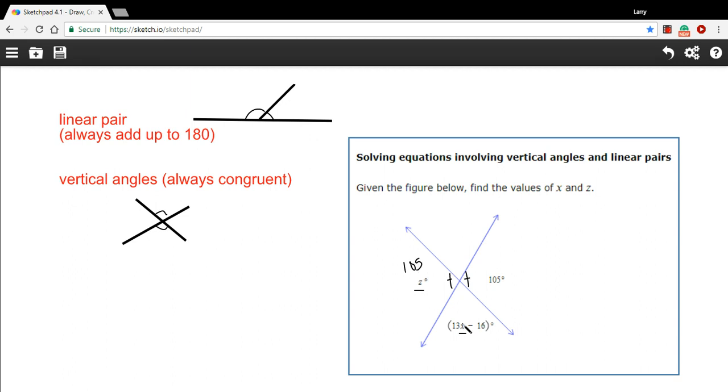All right, so that part is easy enough. Now we need to find x. Here we're going to use the fact that these two angles form a linear pair. They're two angles that make up this line, so they're going to add up to 180 degrees.